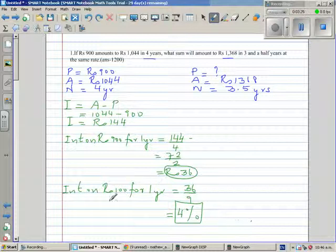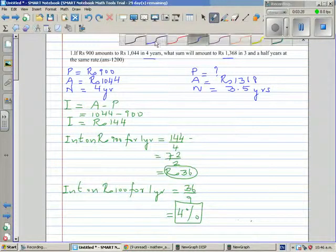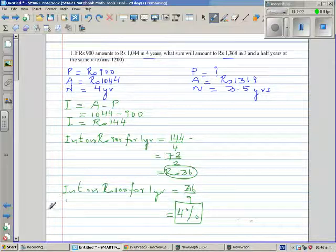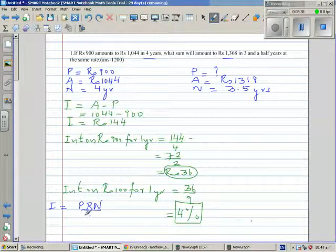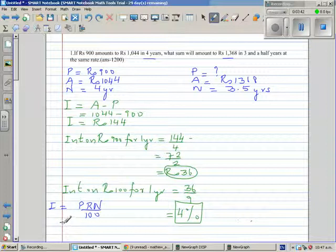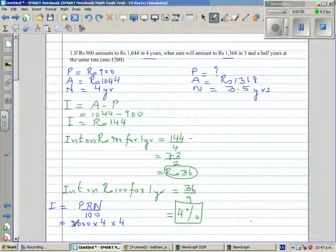I'll use my calculator. So interest, I hope you know the formula of interest is I = P × R × N / 100. This is a simple formula. You don't need this formula, but this is a good formula to remember. So this is 900 times rate is 4, number of years is also 4, divided by 100.